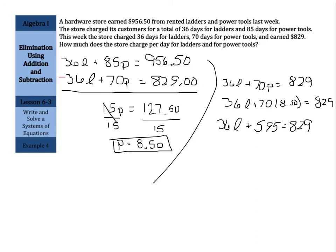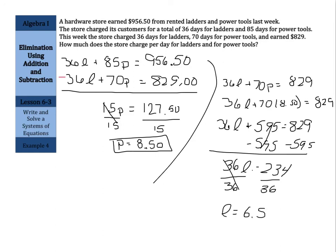If you take your $829, we're going to be subtracting $595 from both sides. And you get 36L equals 234. And finish by dividing by 36 on both sides. And your ladders is going to be 6 and 5 tenths, or $6.50 per day.